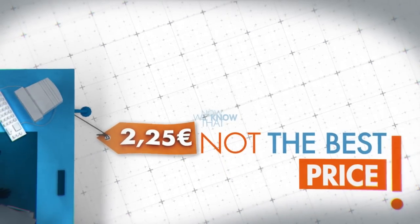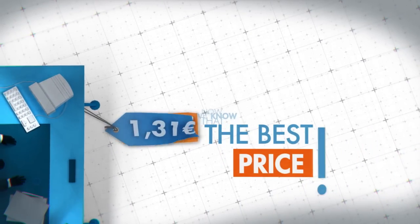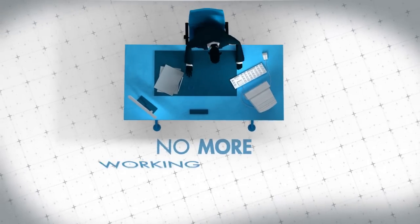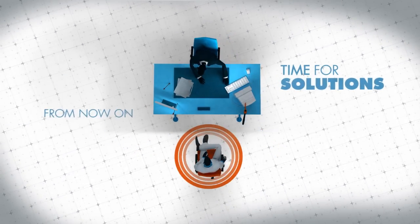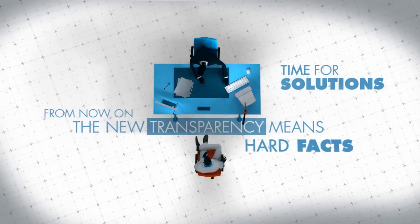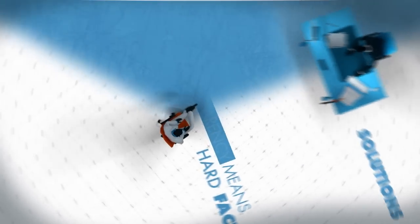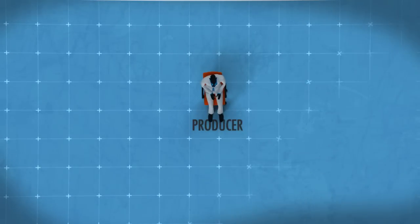Now we know 225 is not the best price, but 131 instead. Instead of working against the suppliers, now is the time for solutions. From now on, the new transparency means hard facts when negotiating prices.